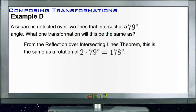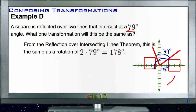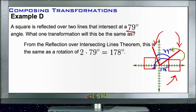Example D, the last example: a square is reflected over two lines that intersect at a 79-degree angle — what transformation is this the same as? If we visualize this, we have our original square on the right. These two lines are approximately 79 degrees apart. Reflecting the original square over the first line puts it in the middle, and reflecting again puts it on the left.